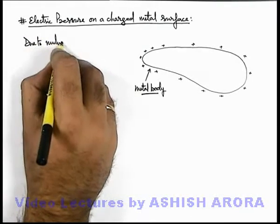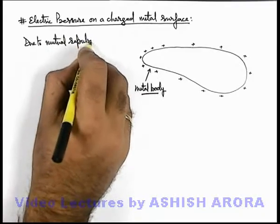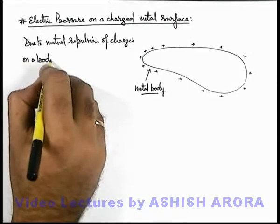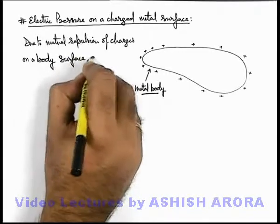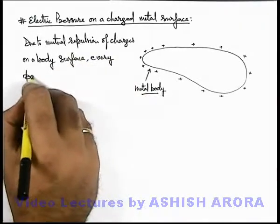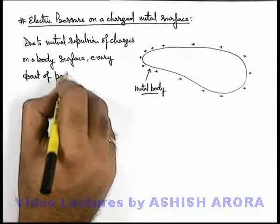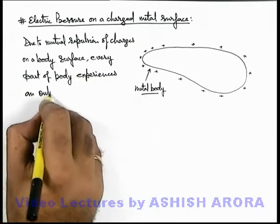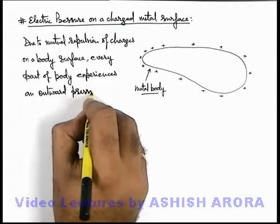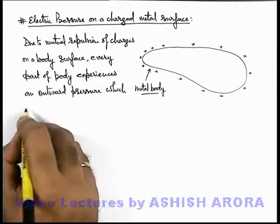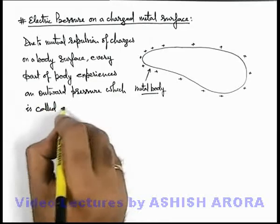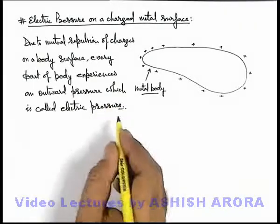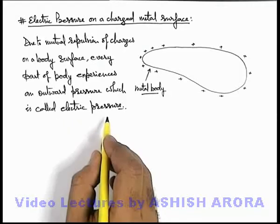So we can write down that due to mutual repulsion of charges on a body surface, every part of the body experiences an outward pressure, which is called electric pressure. Now we are going to study this electric pressure and mathematically calculate its value.